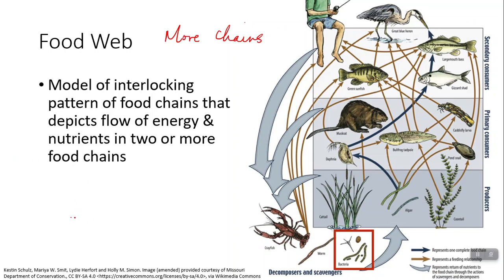A few rules of thumb: the arrow is always pointing in the direction that energy flows. It's always going to go from the one who is getting eaten to the one who is doing the eating. I tend to think of it as going into the mouth of the organism that's doing the eating — that's where the arrow is pointing. A food web is a bunch of food chains stuck together that represent the fact that organisms eat more than one thing.